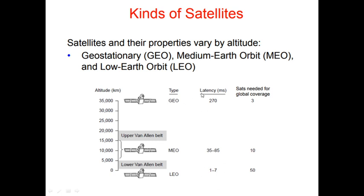Looking at latency — how long in milliseconds it takes to reach — and the number of satellites needed for global coverage: for 0 to 5,000 kilometers you need 50 satellites; for 5,000 to 15,000 kilometers you need 10 satellites; above 35,000 kilometers only 3 satellites are needed to cover the entire Earth. So low Earth orbit requires 50 satellites, medium Earth orbit requires 10, and geostationary requires only 3.